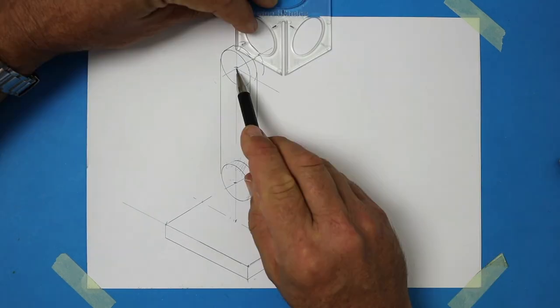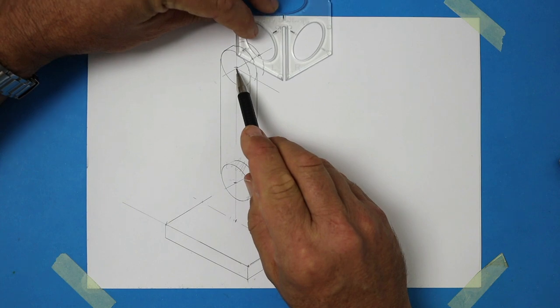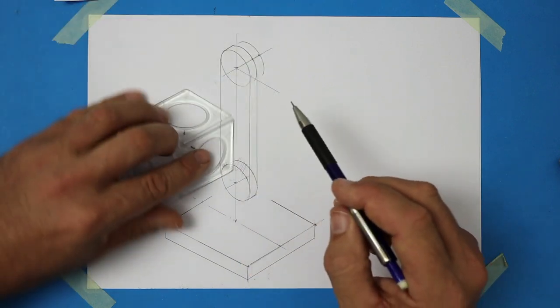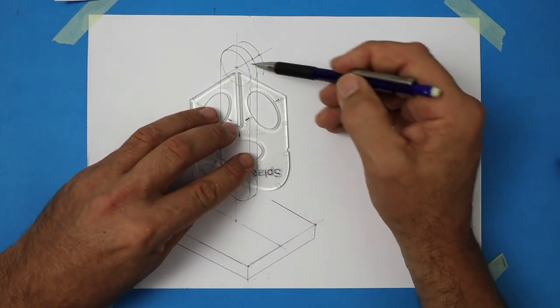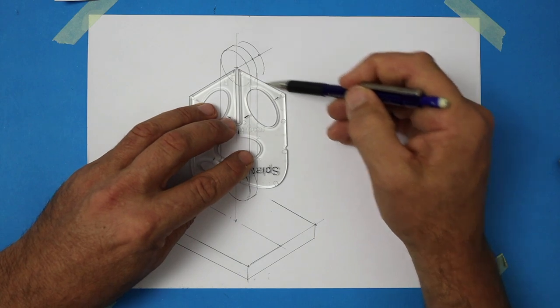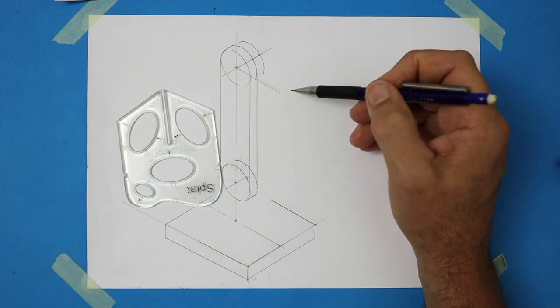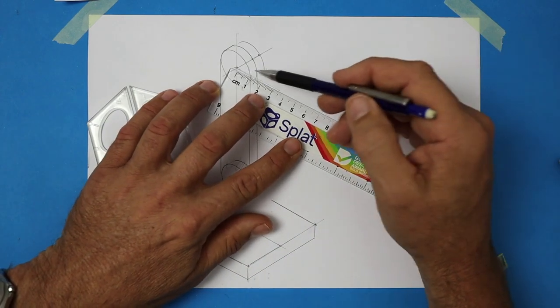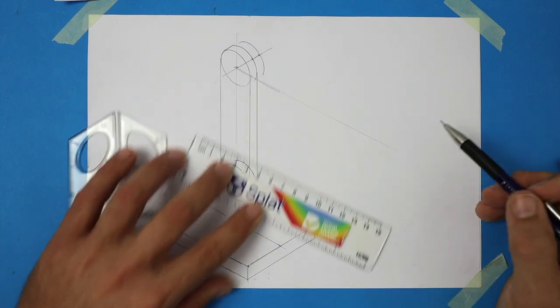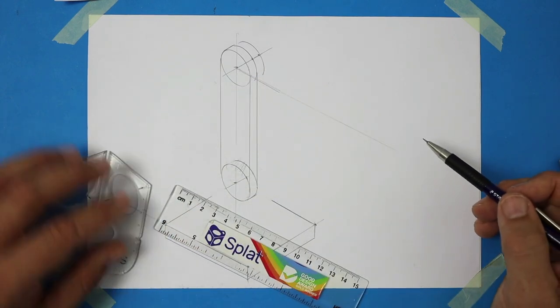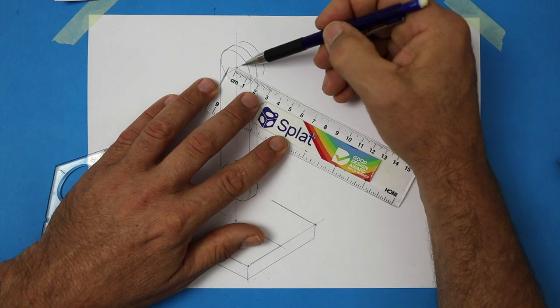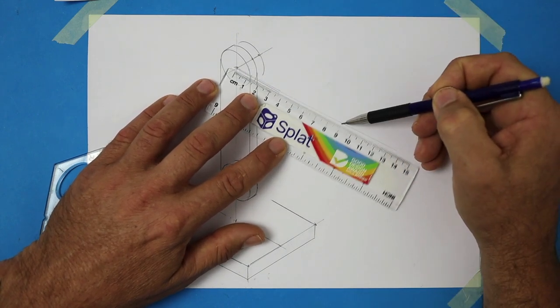Great. Now from the center of that ellipse or that circle, I'm going to draw a line. You could also turn the splat upside down, we'll give you pretty much the same angle. Let's extend that line. That's going to be the direction of the upper arm. I'm going to mark off 90 millimeters.